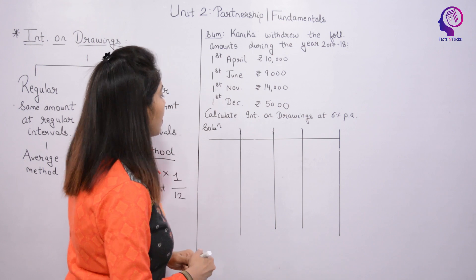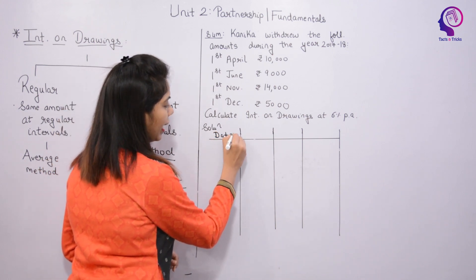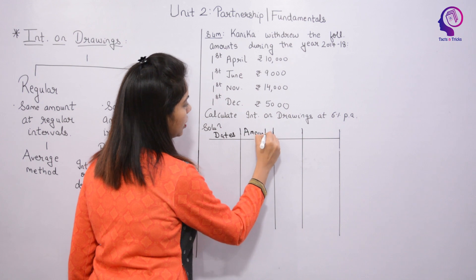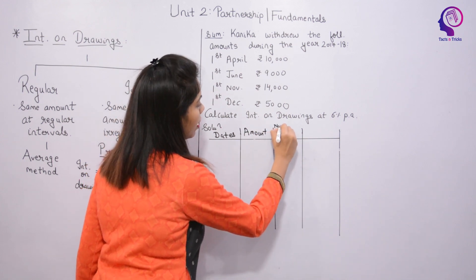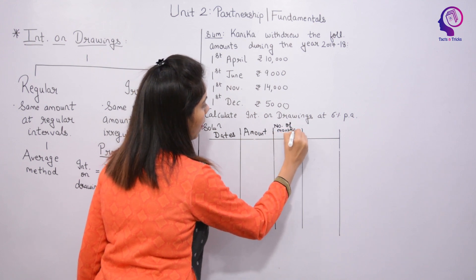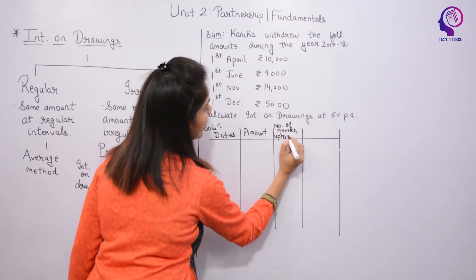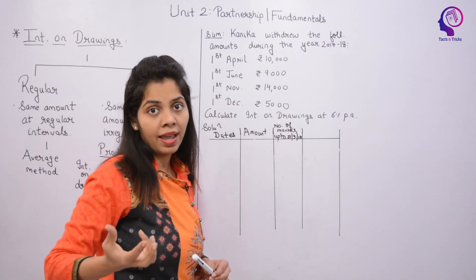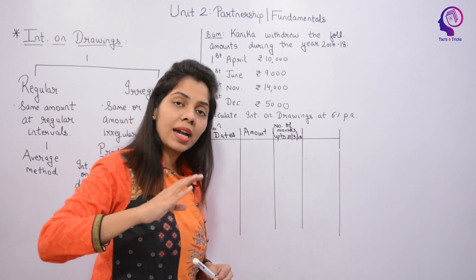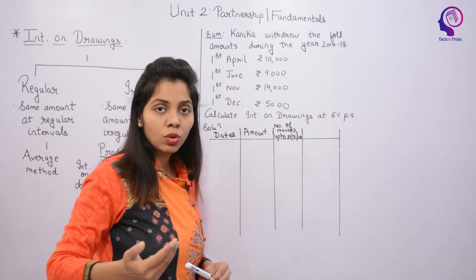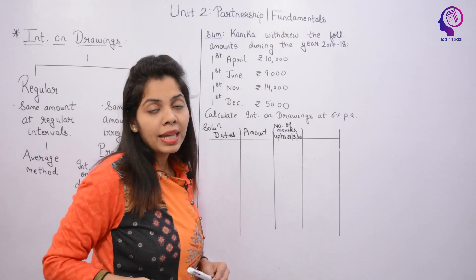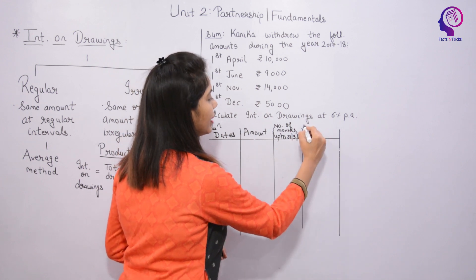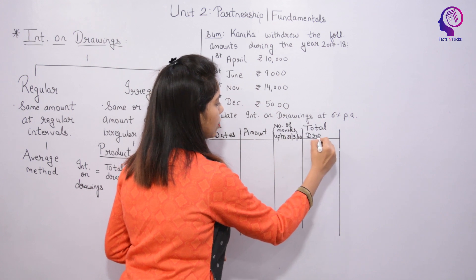I have made 4 columns. The first column: Date — when the amount was withdrawn. The second column: Amount withdrawn. The third column: Number of months remaining up to the year-end date, which is 31st March 2018. The fourth column will be the product. After drawing, we count how many months are left, because we charge interest for those remaining months.